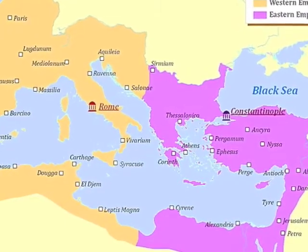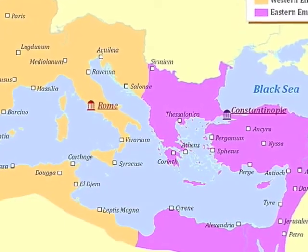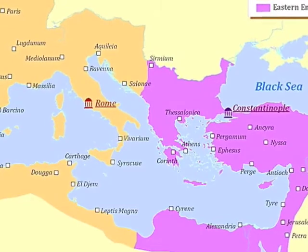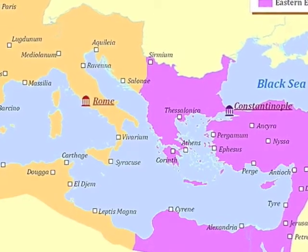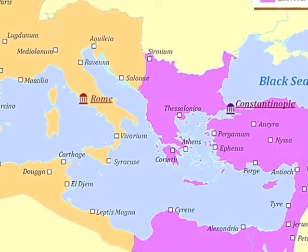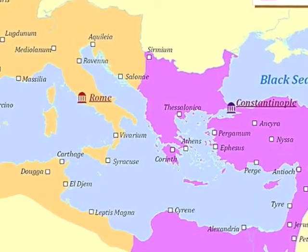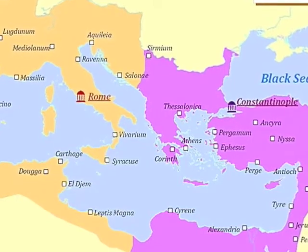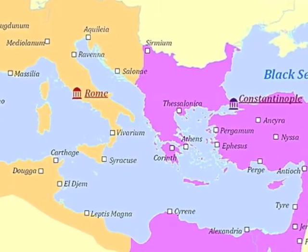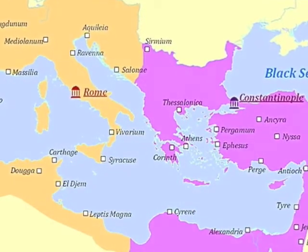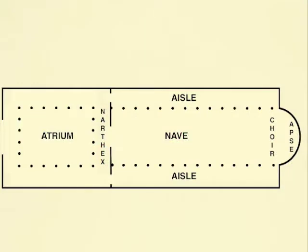Significant early Christian centres included Rome, Milan and Ravenna in Italy, Thessaloniki and Athens in Greece, and Constantinople in present-day Turkey. Our typical plan incorporates features found in many, but not all, early Christian basilicas.